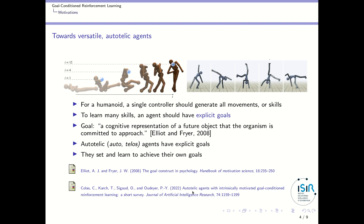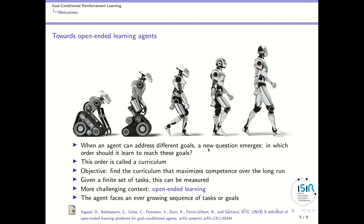You can find a nice survey of autotelic agents with the referenced paper. Beyond autotelic agents, we might be interested in a richer context called open-ended learning, illustrated here by the evolutionary progress of different robots. When an agent can address different goals, a new question emerges: in which order should it learn to reach these goals? This order is called a curriculum. The objective of autotelic agents with a curriculum is to find the curriculum that will maximize the competence of the agent over the long run — how can I learn to achieve as many goals as possible in some amount of time?